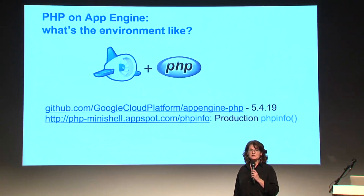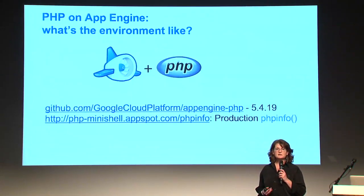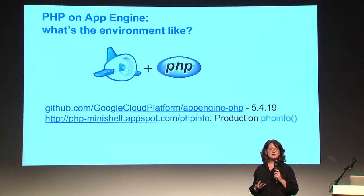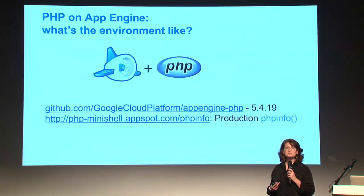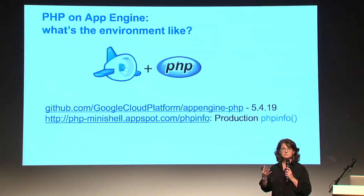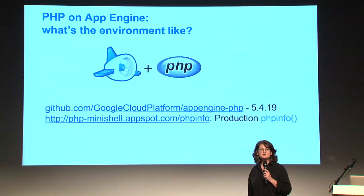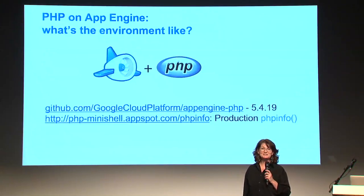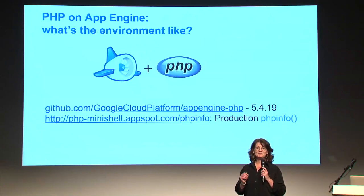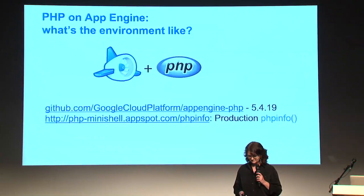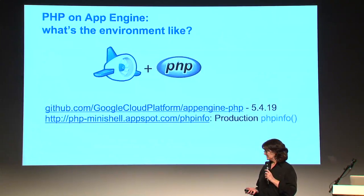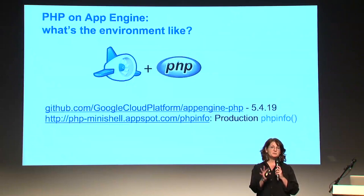Let's talk about the environment you'll be running on App Engine. App Engine currently runs PHP 5.4 — it's just regular PHP. We needed to make a few changes to essentially hook it into the App Engine platform, and we've open-sourced that so you can look at it on GitHub. PHP 5.5 is on the roadmap. We provide a whole set of the most standard common extensions, and we're always looking for feedback if there's something you'd like to see that we don't provide.